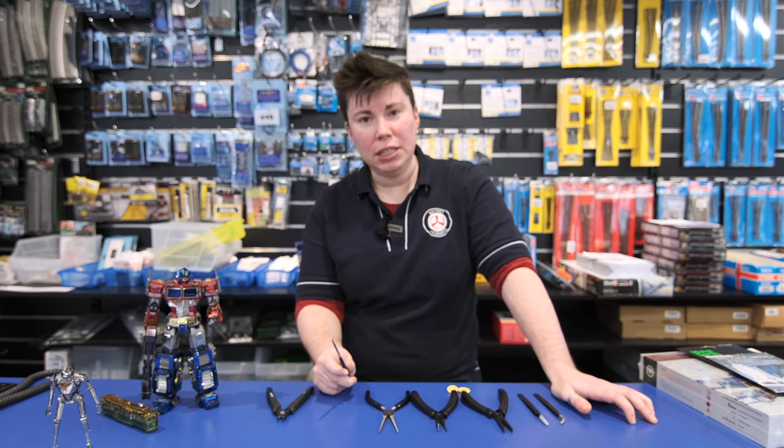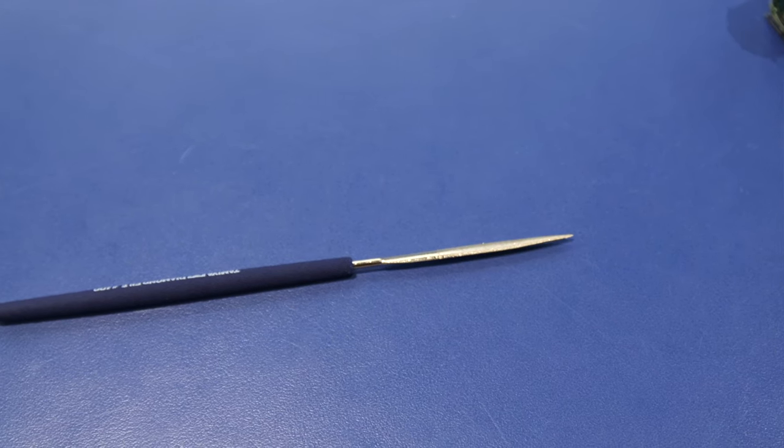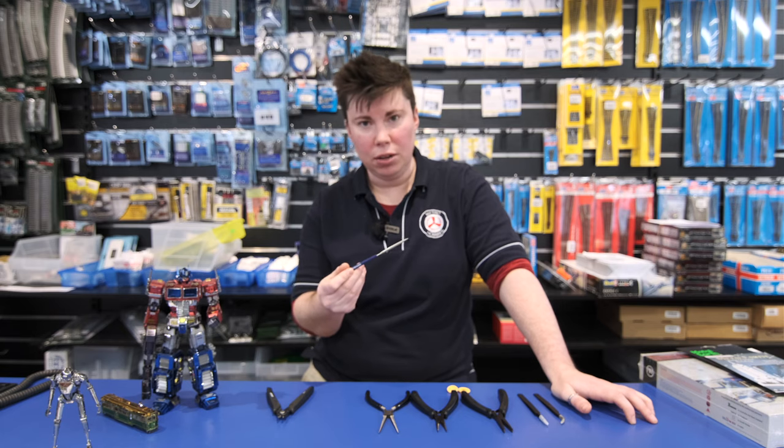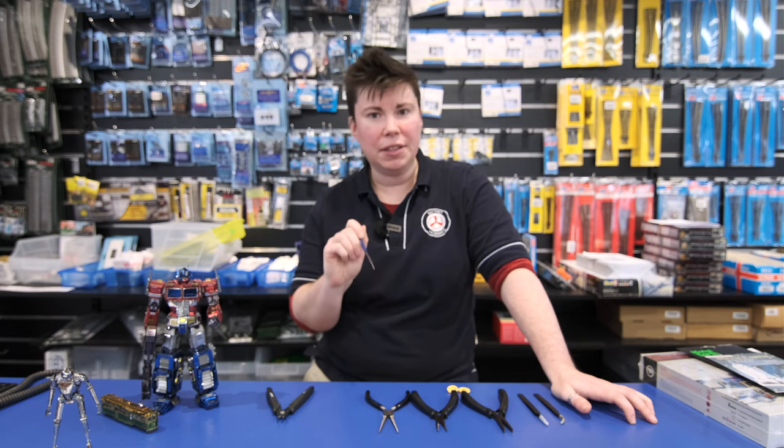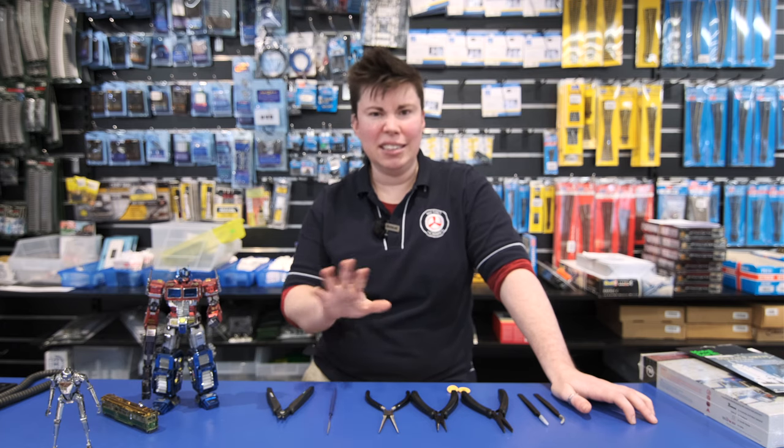To even up the sides, there will be little nubs at the end on the model there at the gate. I use Tamiya's diamond file and sand that back to make it nice and smooth so you don't have any ungainly little edges on your model.